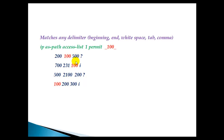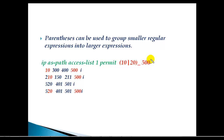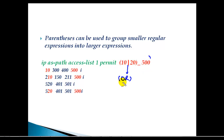Parentheses are used to group small regular expressions into a larger one. For example, if you want to match all prefixes moving through AS500 that also include either AS10 or AS20, you can write it as '_500_(10|20)'. The pipe operator inside the parentheses acts as OR, so it matches AS paths that include 500 along with either 10 or 20.